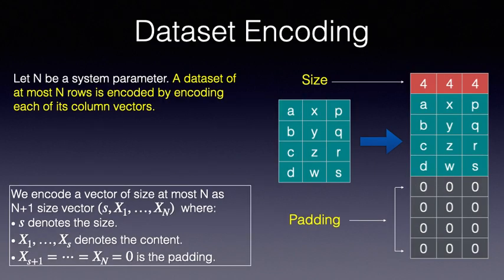We start by describing dataset encoding. Assume N to be a system parameter denoting the size of the largest dataset in terms of number of rows that we want to support. Then, any dataset of size at most N is encoded by encoding each of its column vectors. So, how do we encode a column vector?